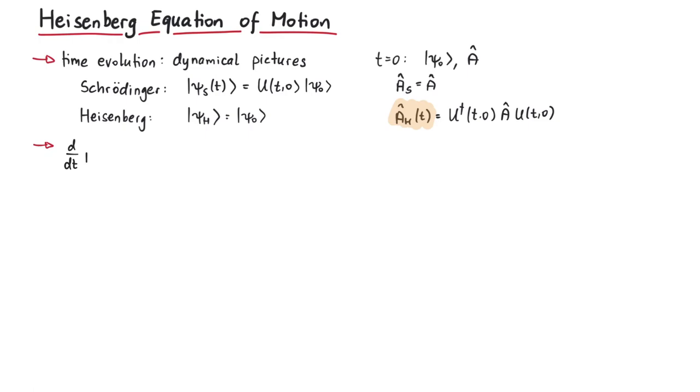In order to derive it, let us start with the total time derivative of a h. We can write this as the derivative of u dagger a u. Applying the product rule gives us three terms.